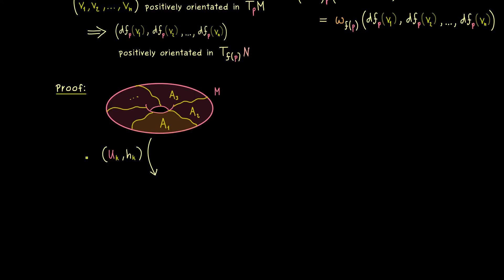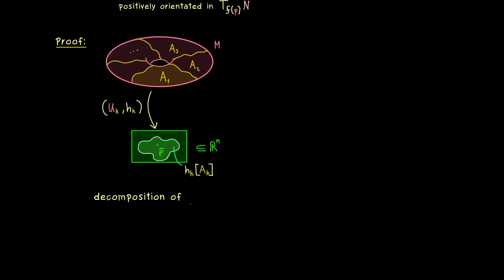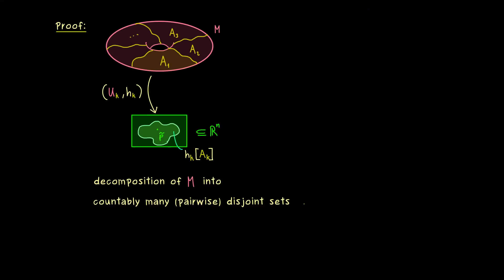And now you might remember that the advantage of these subsets is that we can solve the integral in just one chart. This means we also have a corresponding atlas with charts that are also orientation preserving. And as always we call these charts (Uk, hk), where hk is the corresponding map. And then you know they map into a lower level in R^n, where the whole image of the set Ak lies inside this subset. And this is all we need.